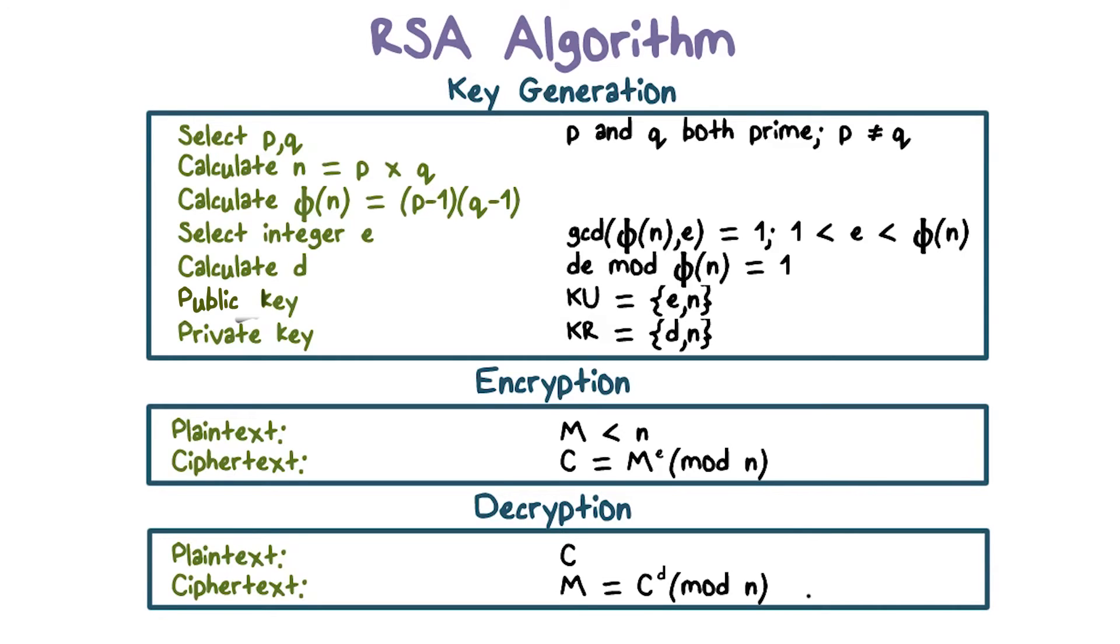For decryption, on receipt of this ciphertext c, Alice will use her own private key d and compute c raised to the power of d mod n. This would result in the original plaintext m. The property of RSA guarantees that only Alice can decrypt this message, because only she has a private key that's paired with the public key that was used to encrypt the message.